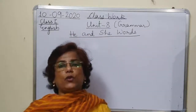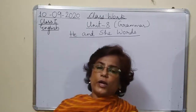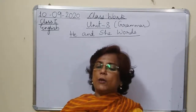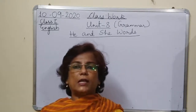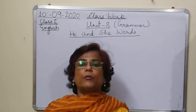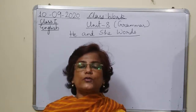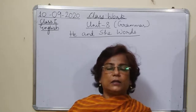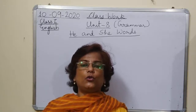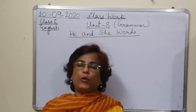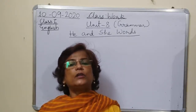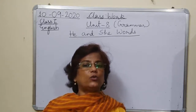He and She words — we have already done he and she words in one of the lessons in our main course book. He words means the words which are used for male gender. In Hindi, strilling means female and pulling means male. He words are used for male and she words are used for females.